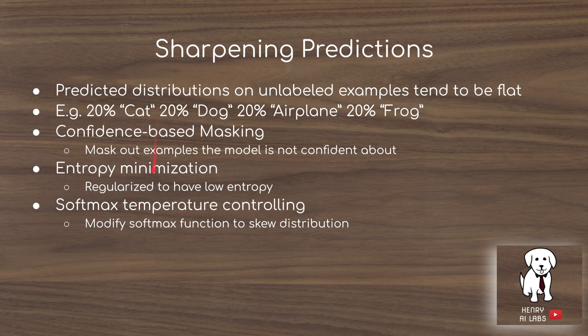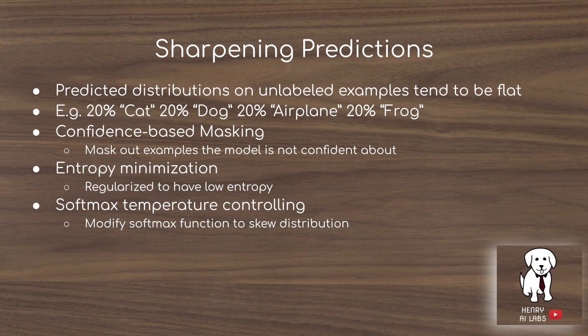They present three techniques for skewing the distribution so it's not uniform, including softmax temperature controlling. A softmax function normalizes a distribution so probabilities sum to one — it's the exponential of the prediction over the sum of all exponentials. The softmax already skews toward higher outputs; for example, if you have 0.4 and 0.38 before the softmax, it will increase the distance between those two values. With softmax temperature controlling, they increase that distance even further using a temperature parameter.